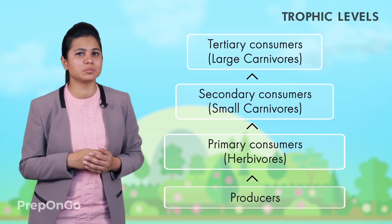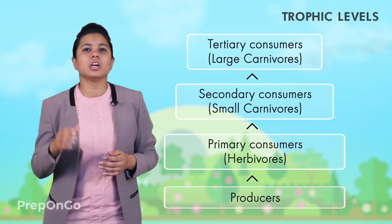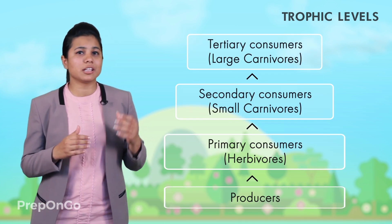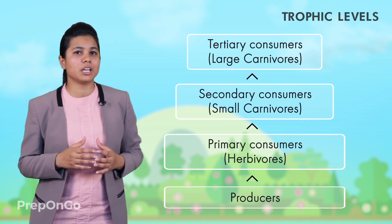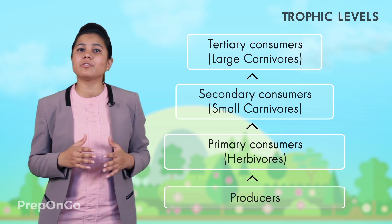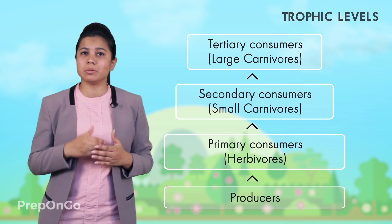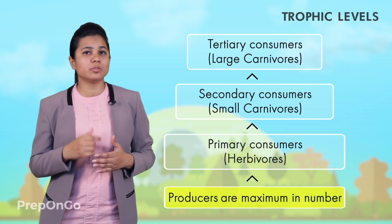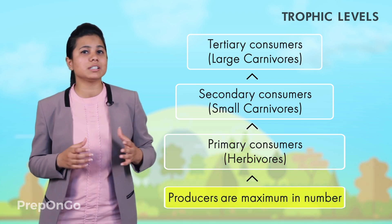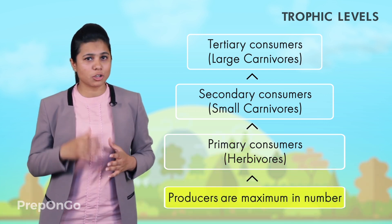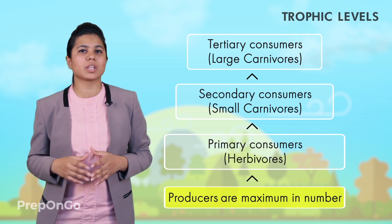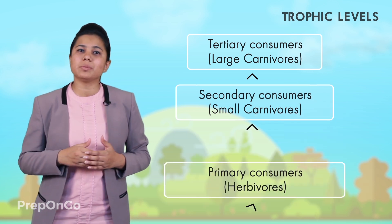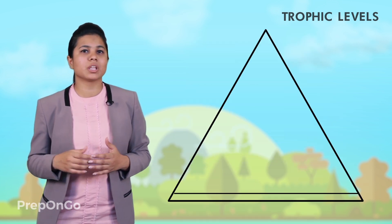As we move upwards in the food chain, the number of organisms decreases. This means at the lowest trophic level the number of organisms will be maximum, and therefore in the food chain the greatest number is of producers. They can be represented by the number pyramid.